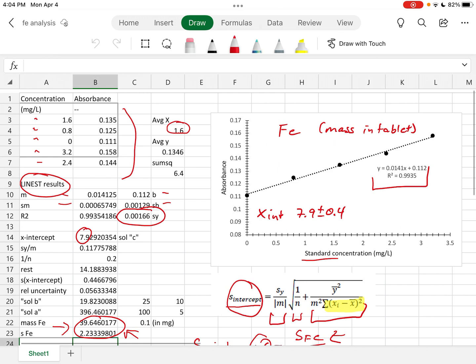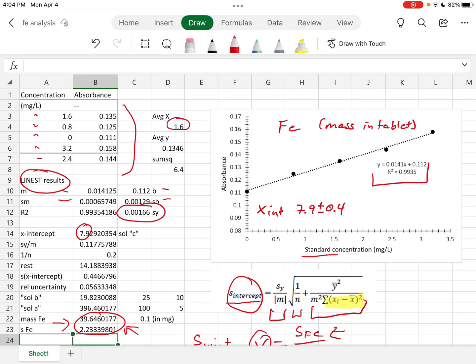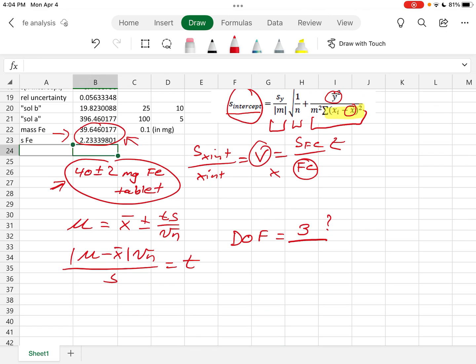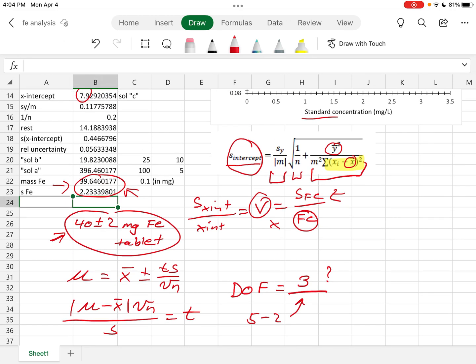Then we're going to compare to the degrees of freedom of three. And so why do we have three? If we take a look at our calibration curve we have one, two, three, four, five different points. And then if we look at our s-intercept we see that we've calculated an average for y and an average for x. Remember the degrees of freedom is usually calculated from the number of trials minus the number of means. So this degrees of freedom comes from five minus two to get that number.